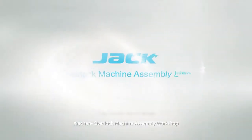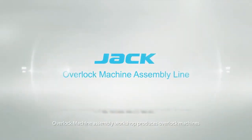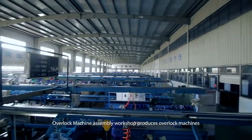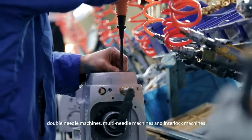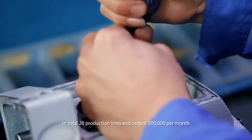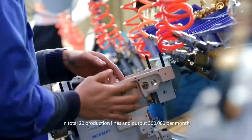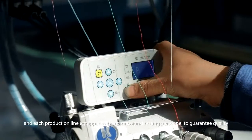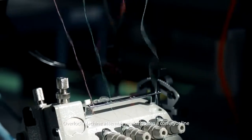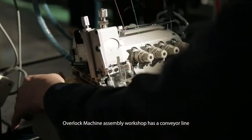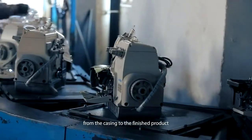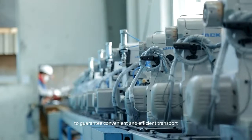Shachan Overlock Machine Assembly Workshop produces overlock machines, double needle machines, multi needle machines, and interlock machines, in total 20 production lines, and output 300,000 per month. Each production line equipped with professional test personnel. The workshop has conveyor line from the casting to the finished product to guarantee convenient and efficient transport.